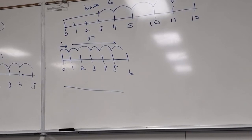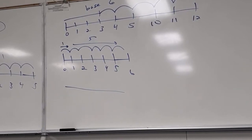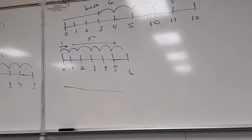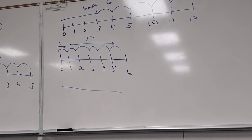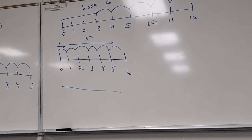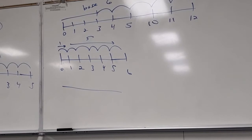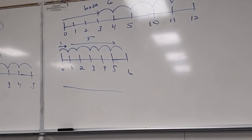Question about problem 3.2b number five: the question asks about the set of whole numbers with three removed — meaning the number three is removed, not three numbers removed. So instead of zero, one, two, three, four, the set is zero, one, two, four — the number three is gone but the numeral three appearing in other numbers like thirty is irrelevant.